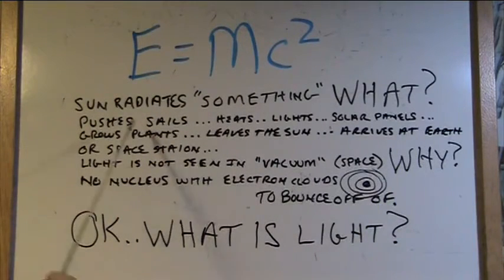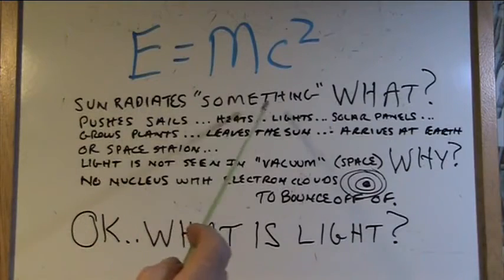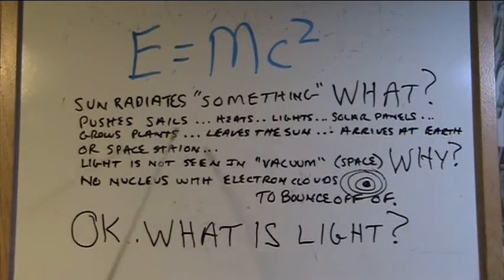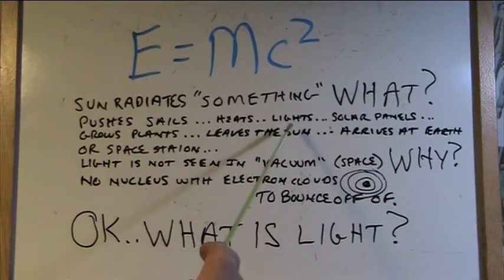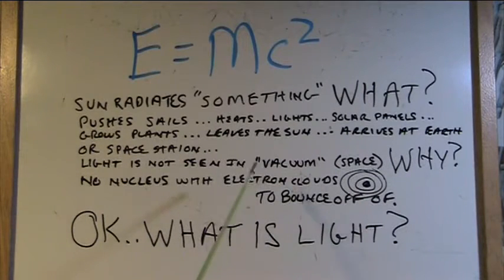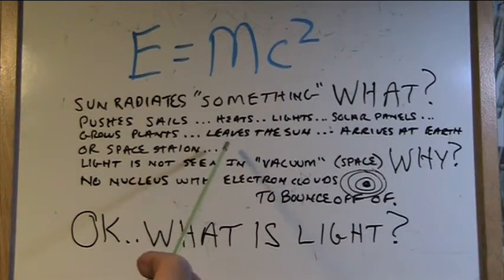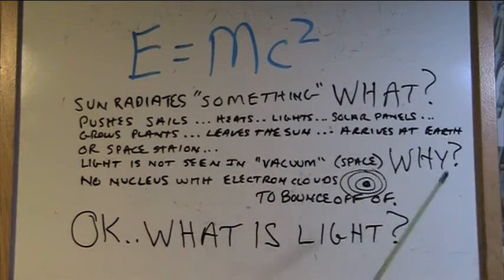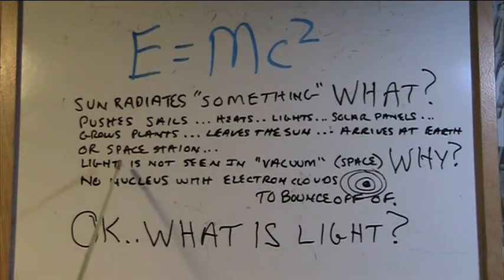That can't be right. But the sun radiates something, what it is I'll tell you in a minute. And we know that it pushes sails, it heats things when it hits us, it lights things up. It makes electricity go into solar panels. It grows plants. Even light that we produce here pushes onto plants, makes them grow. It leaves the sun, we know that for a fact. It arrives at Earth, we know that for a fact. Or it hits a space station and lights that up out in space. So light is not seen in the vacuum of space. Why? Well, I'm going to tell you that in a minute, too.